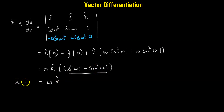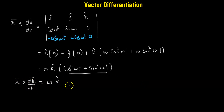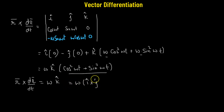So we obtain r × r' = ωk̂. We also know that k̂ = î × ĵ, so r × r' = ω(î × ĵ). This completes the proof of part 2.